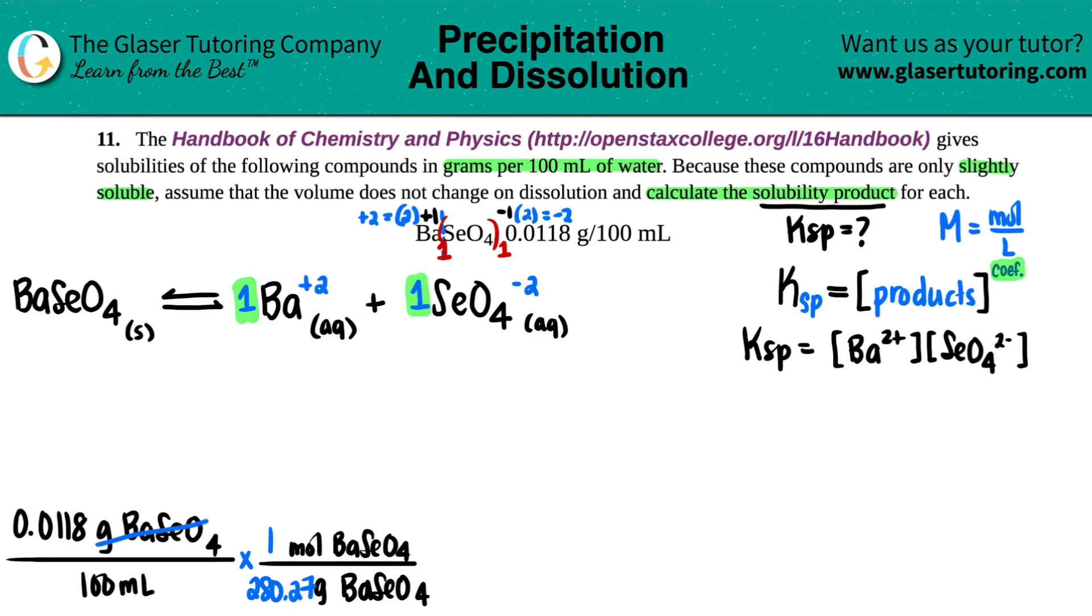And now the grams cancel out. And you're just left with the moles. So we have one unit checked. Now we just have to convert the mils to liters. So just times by another ratio. In this case, we're going to put the milliliters on the top to cancel out the mils. And then we'll put the liters on the bottom. Remember, 1,000 mils always equals one liter. And that cancels out milliliters. And now you have the liter. Mole divided by liter is molarity.